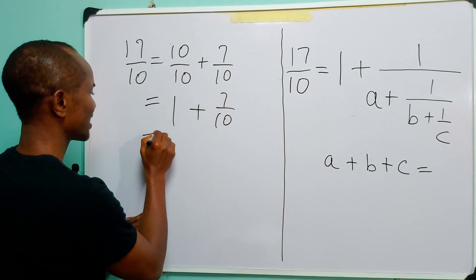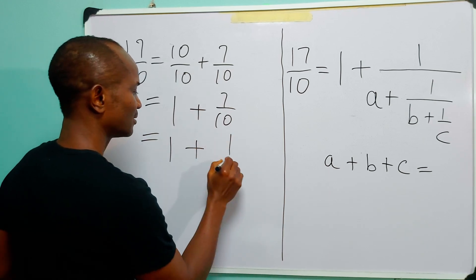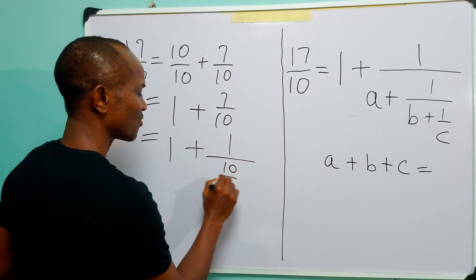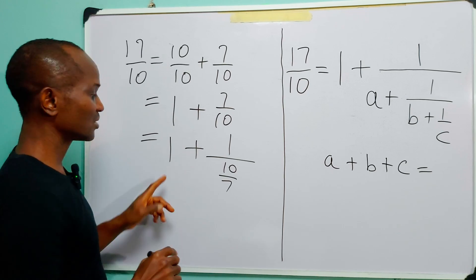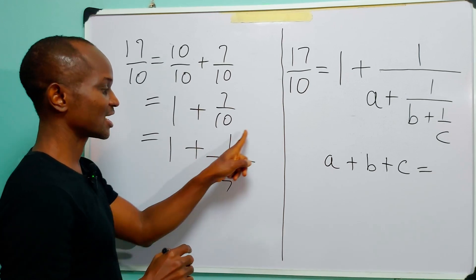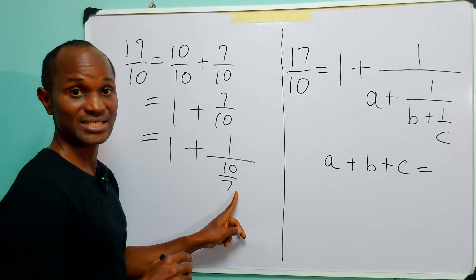Also, we can write this as 1 plus 1 over 10 over 7. Because you know that this line reads as 1 plus the reciprocal of 10 over 7.